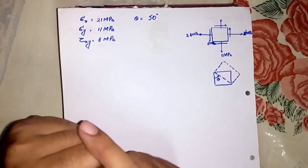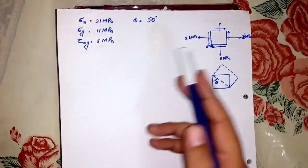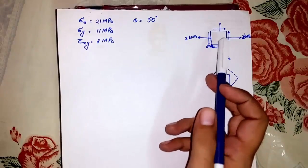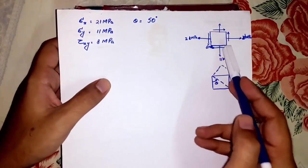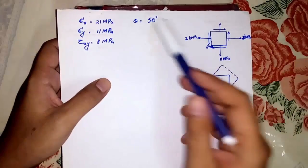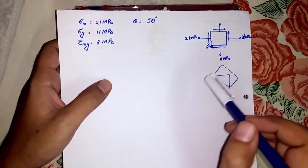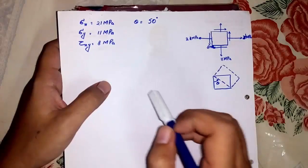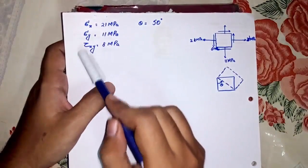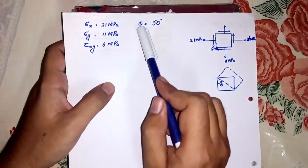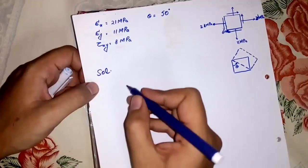Assalamualaikum guys. In this video we will solve a problem — we have to find stresses in a body. The body is inclined at 50 degrees, so we will solve this problem using Mohr's circle. We are given sigma x, sigma y, tau xy, and the inclination which is 50 degrees.